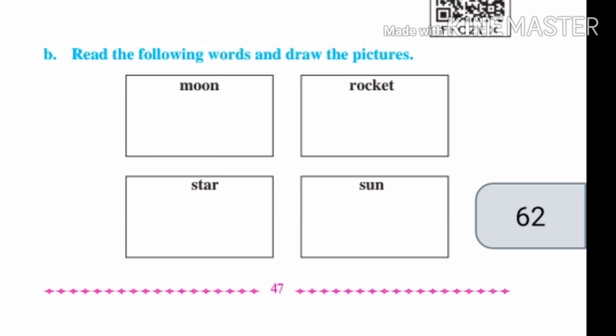Read the following words and draw the pictures. Khalil shabd vacha ani tyanusar tenchachitra kada. Moon, rocket, star, sun — you have to draw all the pictures of these words. In the box of moon, draw the picture of moon. In the box of rocket, draw the picture of rocket. In the box of star, draw the picture of star. In the box of sun, draw the picture of sun.